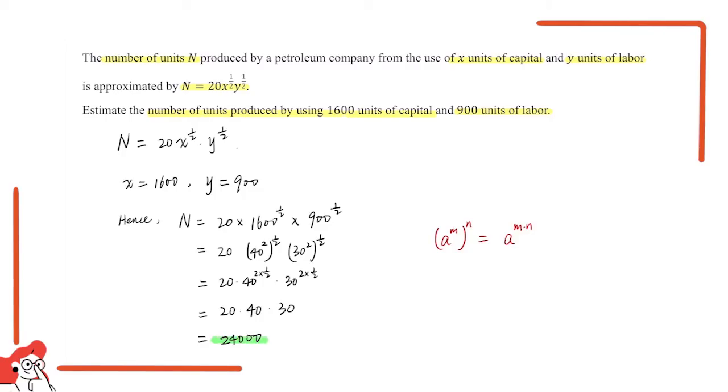Therefore, the number of units produced is 24,000.